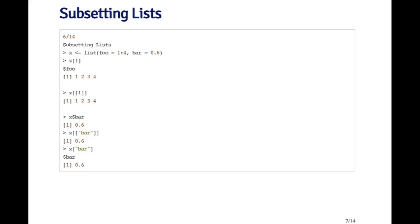In the next example, I'm using the dollar sign — x dollar bar — and that gives me the element associated with the name bar, which is the single number 0.6. I can also use the double bracket operator and pass it a string: x double bracket quote bar is the same as doing x dollar bar, and it just gives me 0.6. If I use the single bracket with the name — x bracket quote bar — that gives me a list with the element bar in it, because the single bracket always returns a list when subsetting a list. The nice thing about subsetting by name is that you don't have to remember where the element is in the list — you can just use its name and it will automatically extract that element.